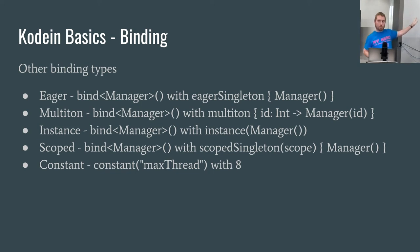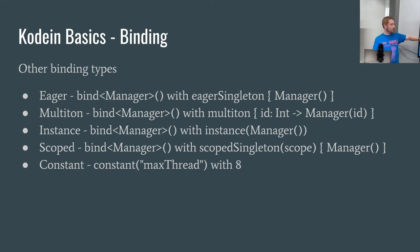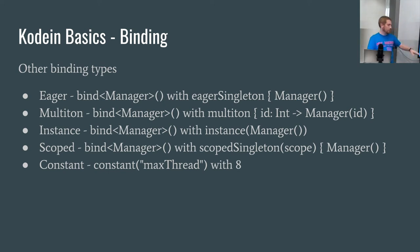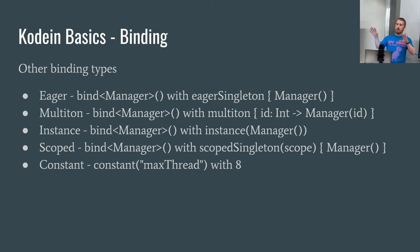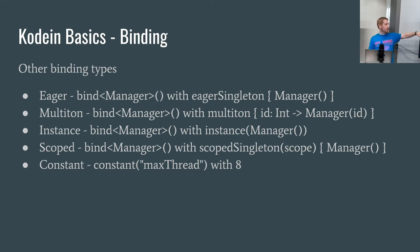Other binding types include constants, which you'd use for things like your API URL or MaxThread — something you're pretty much never going to change. Scoped is really helpful if you want a dependency to live only as long as an activity or a fragment — you can bind the dependency to the lifecycle of something. Instance binding, Multitone, and Eager are also available. Multitone is a singleton-style binding where you pass in an identifier, and it ensures any other thing using that identifier gets the same instance.